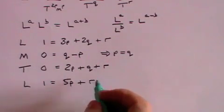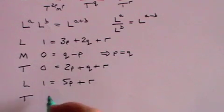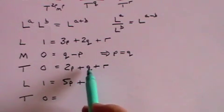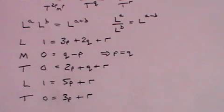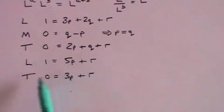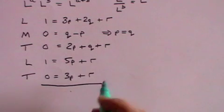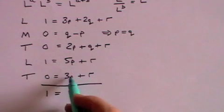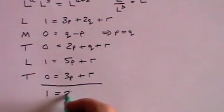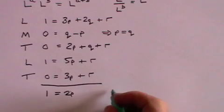And similarly here in terms of time, 0 equals well 2p plus q is simply 3p plus r. And now we have two very simple simultaneous equations. We just subtract one from the other. 1 minus 0 is 1, 5p minus 3p is 2p, r minus r is 0, so 2p equals 1.